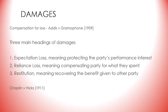We now move on from discussing breach of contract to remedies, starting with damages as the primary remedy for loss. The most commonly used remedy for breach of contract is damages. The aim of damages is to compensate the victim of the breach, not to punish the party in breach. It is for this reason that one will not be able to obtain compensation unless they can demonstrate that they have suffered loss on account of the breach.